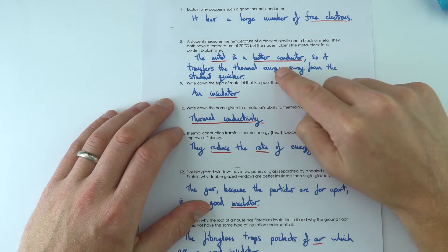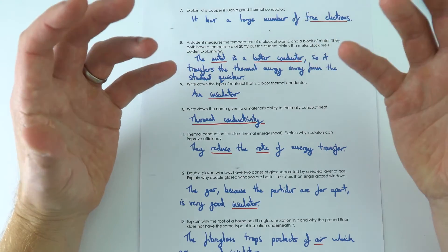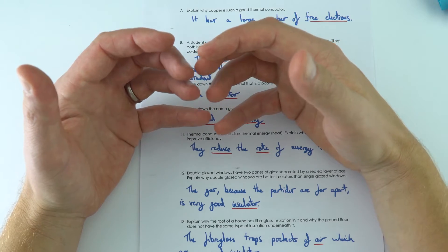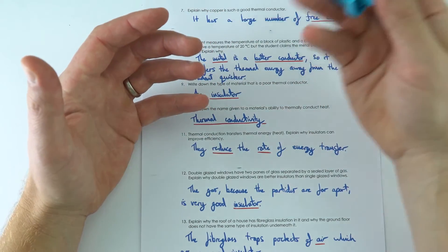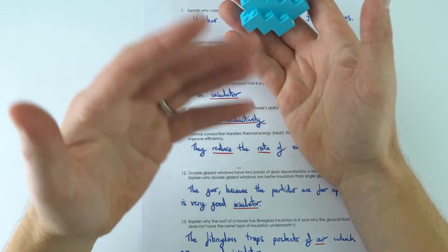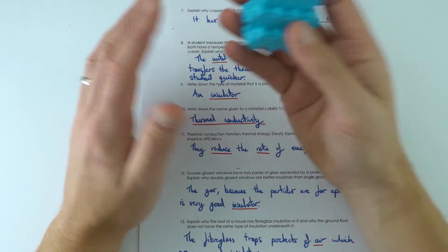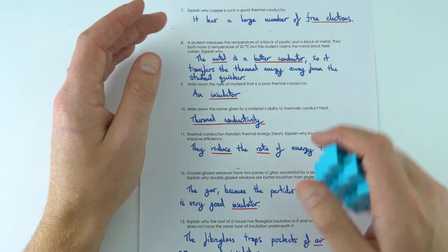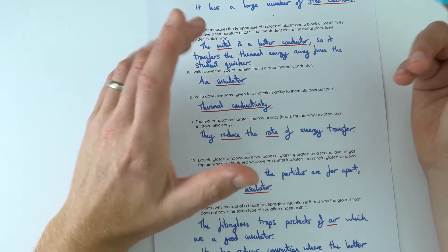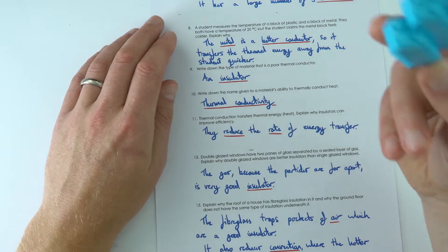We then have this question here about a block of plastic or a block of metal. Now the metal feels colder, but that's only because it's transferring the thermal energy quickly away from the hand, whereas plastic, like this plastic here, is a good insulator, and that means my hand still feels quite warm because the energy in my hand isn't being transferred away by this plastic. We call things which are good at insulating insulators, which means it's a poor thermal conductor, so this is a good insulator.